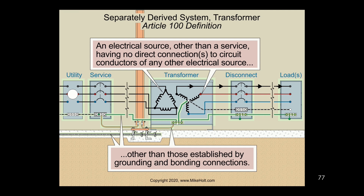Let's read the actual definition: a separately derived system is an electrical source — which is the secondary winding — other than the service, having no direct connection. None of the secondary conductors are connected to the primary conductors — no direct connection to the circuit conductors of any other source, other than those established by grounding and bonding.